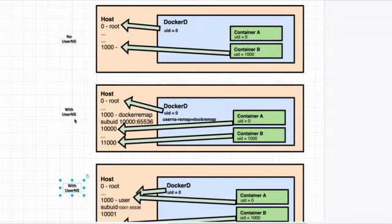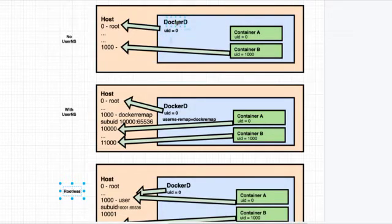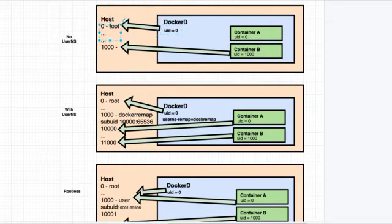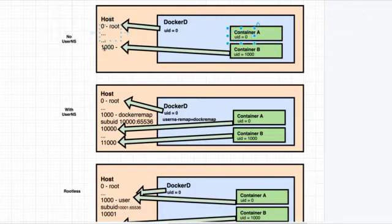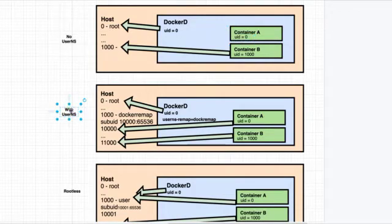In the first scenario — no user namespace — the Docker daemon starts with a UID of zero, which belongs to the root user in Linux. Container A also gets UID zero, and Container B acquires some other UID. There are a number of UIDs present inside the namespace. In this case, the Docker daemon is running with UID zero (root), while a container may assume a UID like 1000.